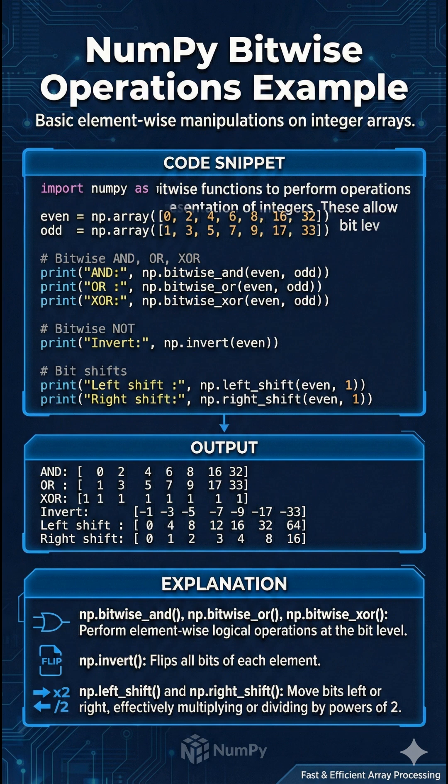It begins by applying logical operations np.bitwise_and, np.bitwise_or, and np.bitwise_xor element-wise. Because each corresponding pair, e.g. 2 and 3, differs only by the least significant bit, the AND operation preserves the even values, the OR operation results in the odd values, and XOR isolates the difference to produce an array comprised entirely of 1s.